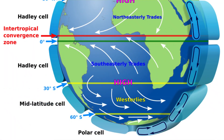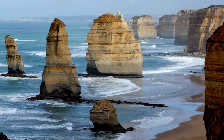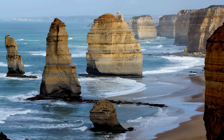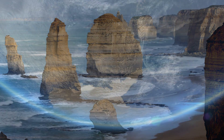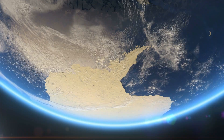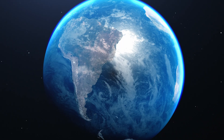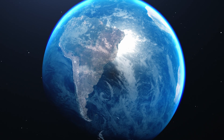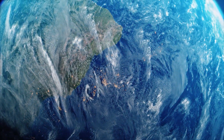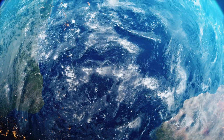The southern hemisphere mirrors this setup. There is a southern polar jet and a southern subtropical jet. Because the southern hemisphere has less land and more ocean, the southern polar jet is often stronger and more continuous, especially around Antarctica. These jet streams drive powerful storm systems that affect southern South America, South Africa, Australia, and New Zealand. Together, these four jet streams form a global wind system that redistributes heat around the planet.